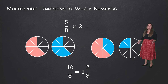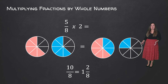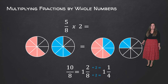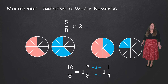Now 1 and 2 eighths can be simplified if we divide both the numerator and the denominator by 2. So 2 divided by 2 is equal to 1, and 8 divided by 2 is equal to 4. So 5 over 8 times 2 is equal to 10 out of 8, which can be written as 1 and 2 eighths, which simplifies to 1 and 1 fourth.